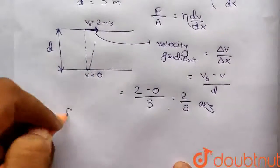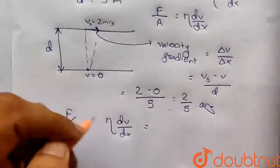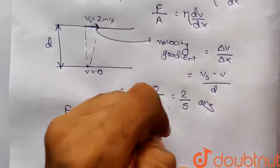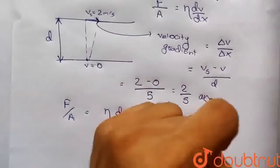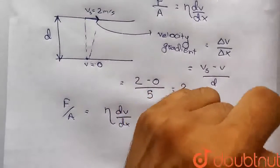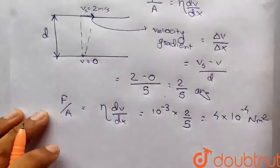Now if we have force per unit area, F by A, its value is eta into dV by dx. This is the value of eta, 10 raised to power minus 3, into 2 by 5. This gives us 4 into 10 raised to power minus 4 newton per meter squared.